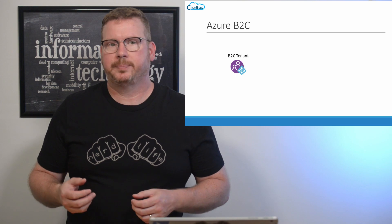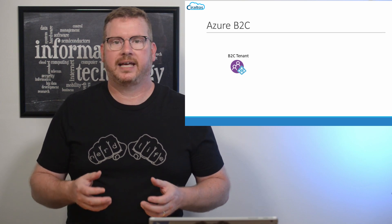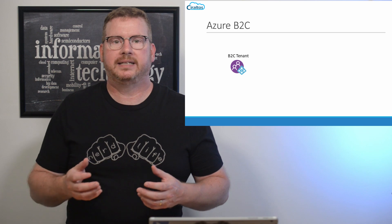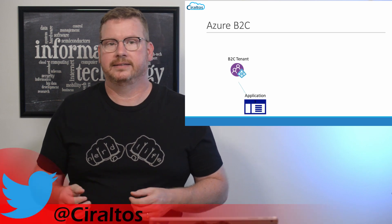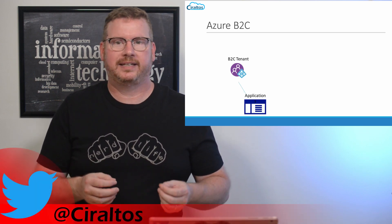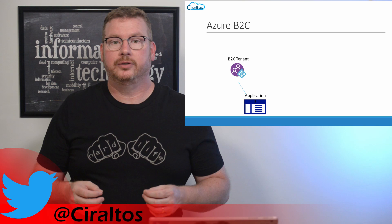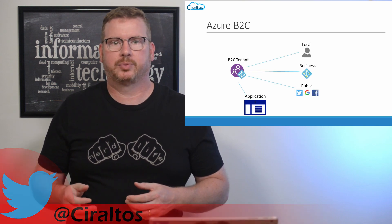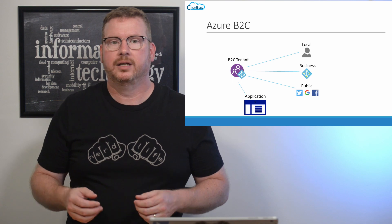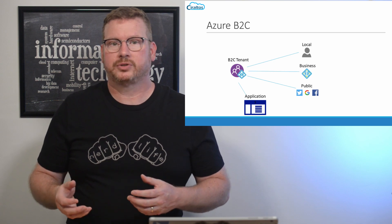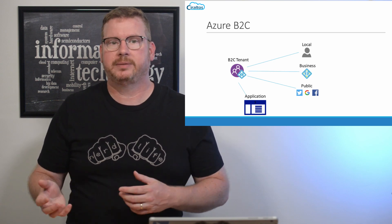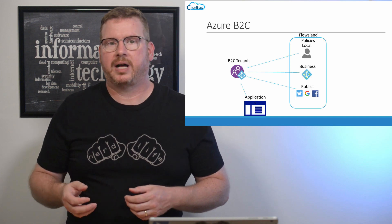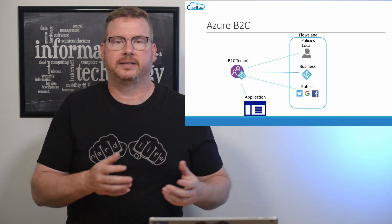Here's how it works. Azure B2C creates a tenant to represent the directory of users. This is similar to, but different from, an Azure AD tenant. Applications register to the tenant and users register as local accounts or with external identities using protocols like OAuth and OpenID, or with social identities such as Twitter, Facebook, and Gmail. Flow for common tasks such as user sign-up, where custom policies are applied to those users.